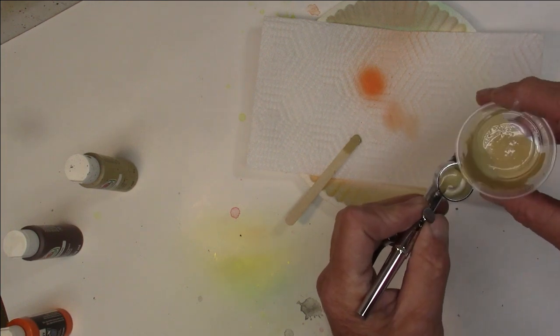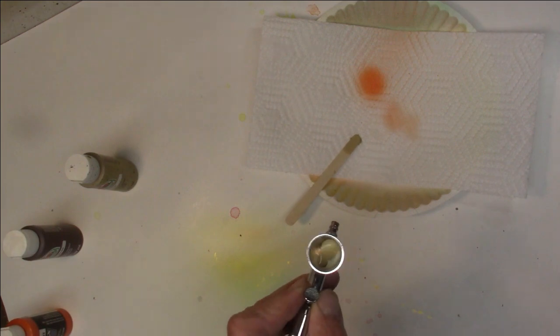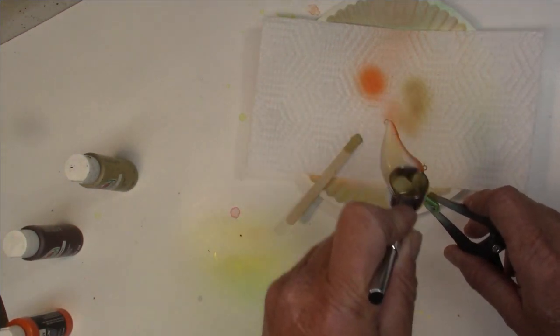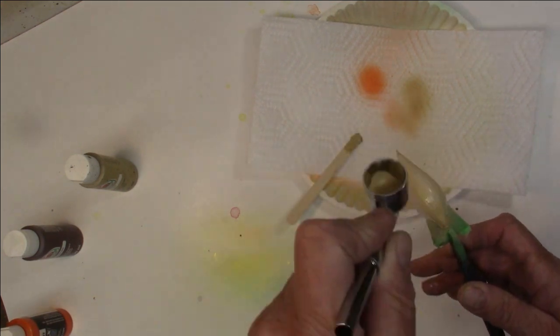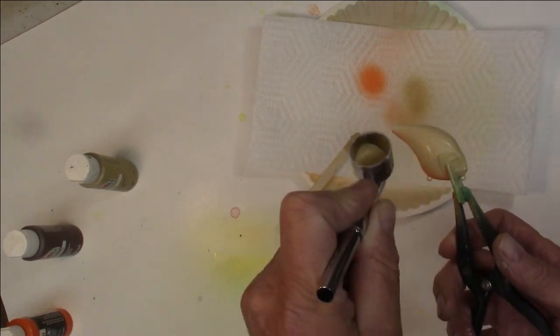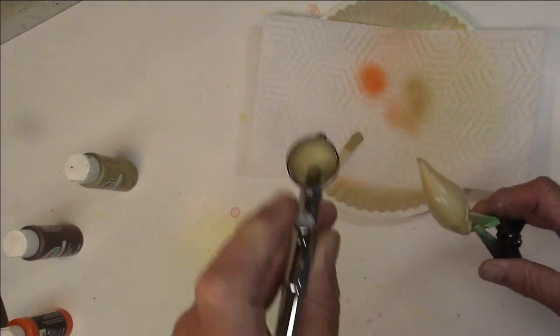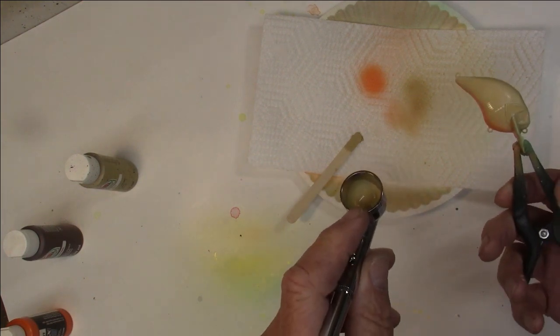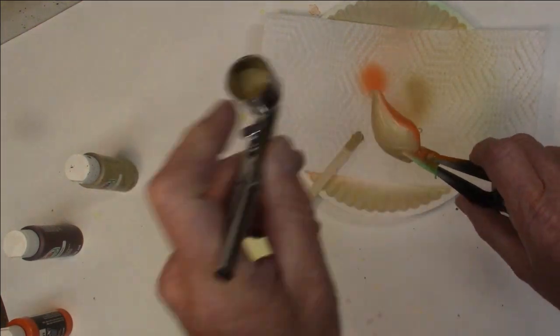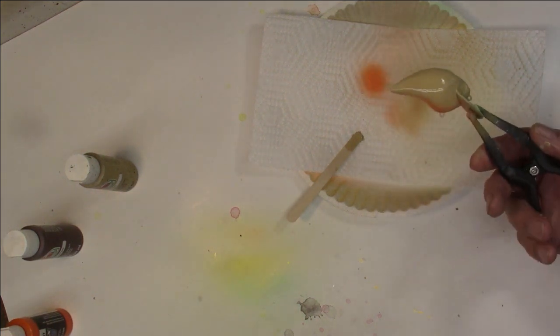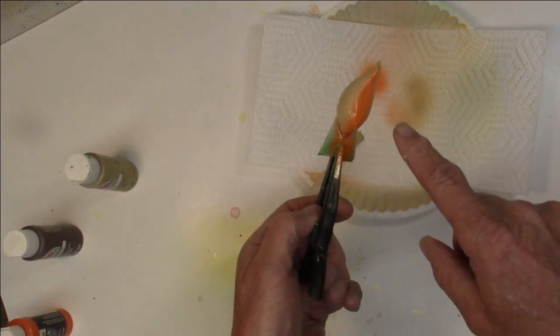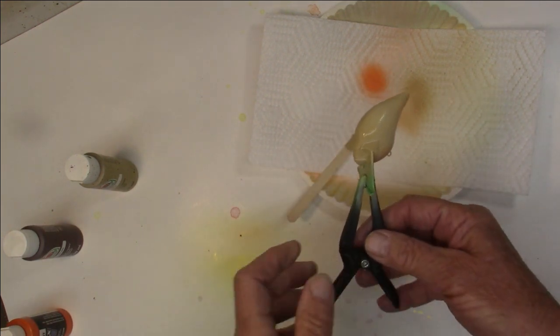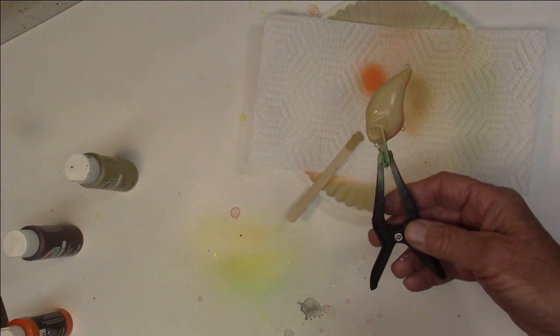Alright, pour a little of that in. Now we're just going to cover the entire lure. Let it taper down on that orange on the belly. That's it. So we got our orange in the belly, we got this khaki or light tan on the side. Now I'm going to get the heat gun, we're going to dry this real well, then we'll move on to the next step.